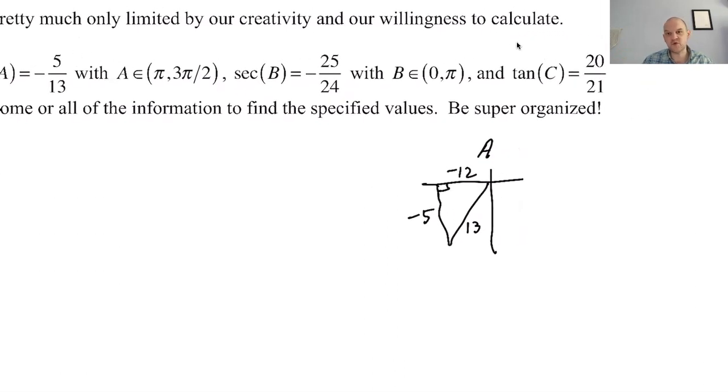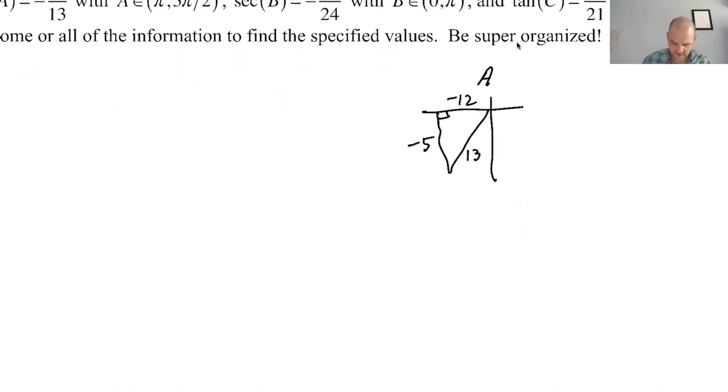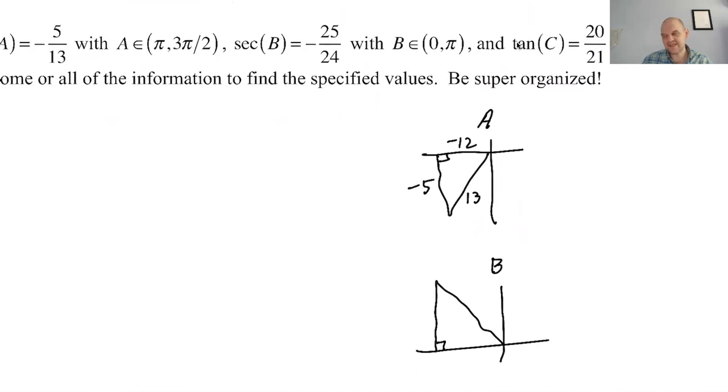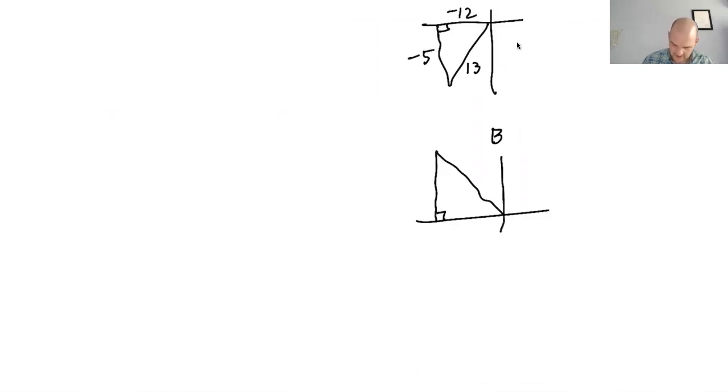The next one, b is somewhere between zero and pi, but secant is negative, which means it's definitely not the first quadrant. So b is a second quadrant angle. So secant, I'm just gonna think cosine is negative 24 over 25. So cosine is negative 24, 25, and then positive 7.